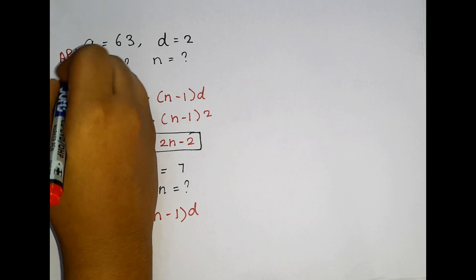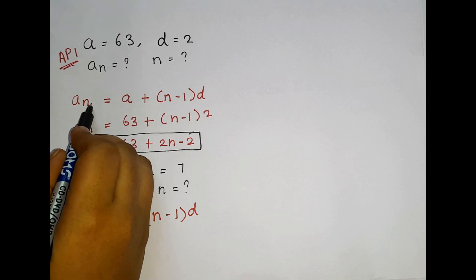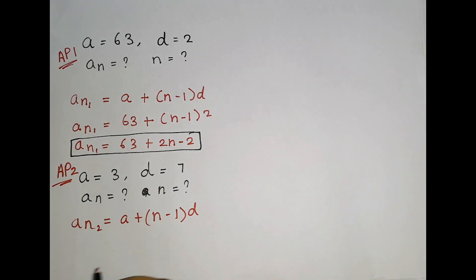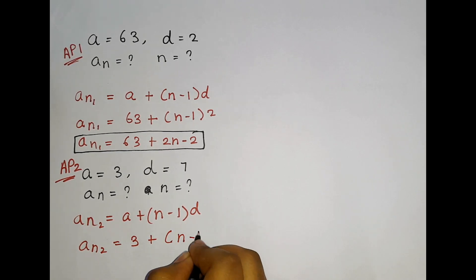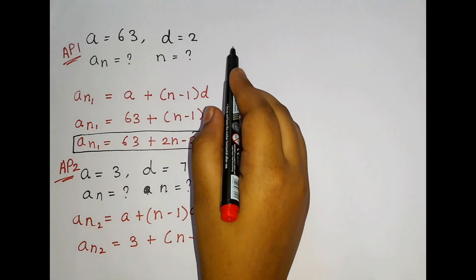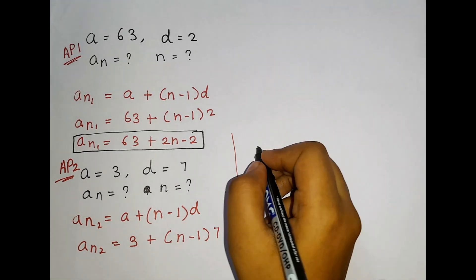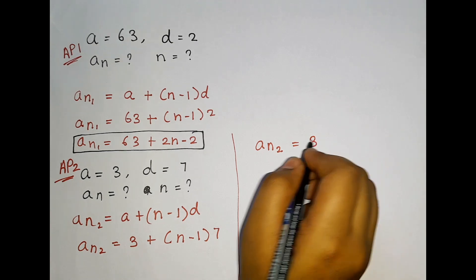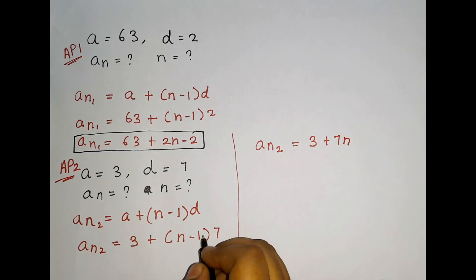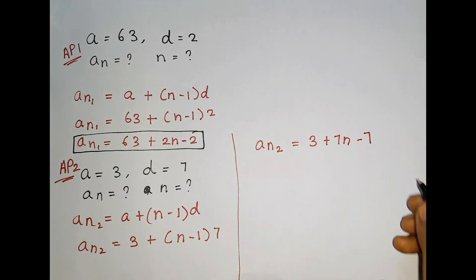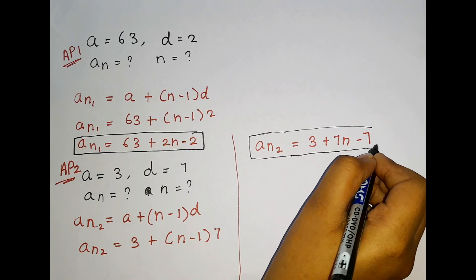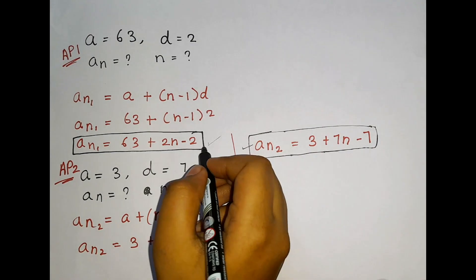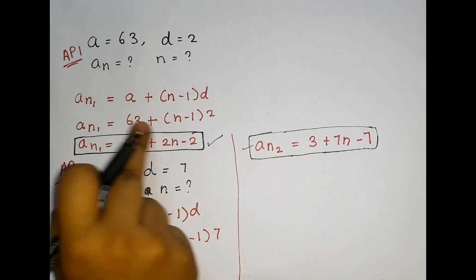We are just solving for AP number 2. Already we solved for AP number 1. Let us take AP1's result as Aₙ₁ and AP2's as Aₙ₂ so you won't get confused. Aₙ₂ = a + (n − 1) × d = 3 + (n − 1) × 7. So Aₙ₂ = 3 + 7n − 7.